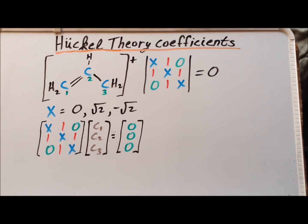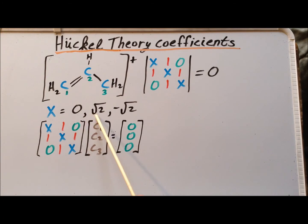In my derivation, I am going to try to use as little linear algebra as possible and demonstrate how we can find the solution using only the algebra that you would have learned in high school. To find the coefficients, we have to proceed in three steps. We are going to take the values of x — 0, square root of 2, and minus the square root of 2 — individually, one at a time, and for each case we are going to find particular molecular coefficients that correspond to that particular energy.